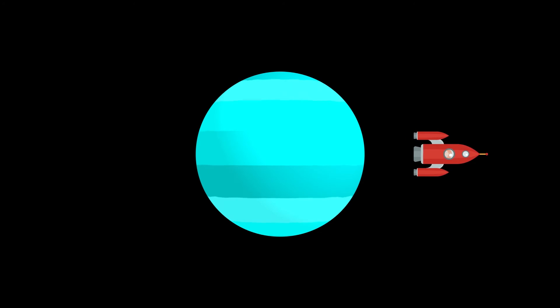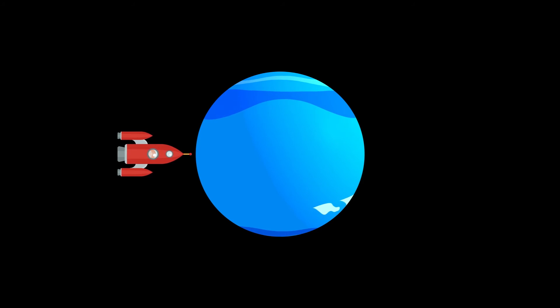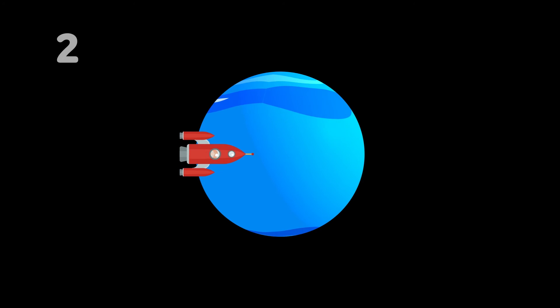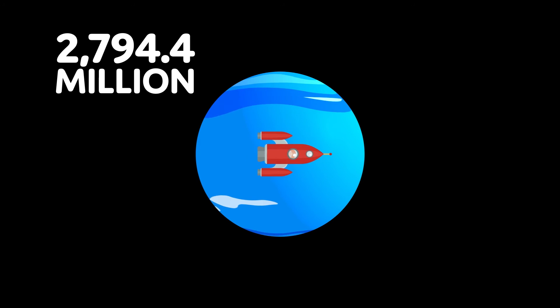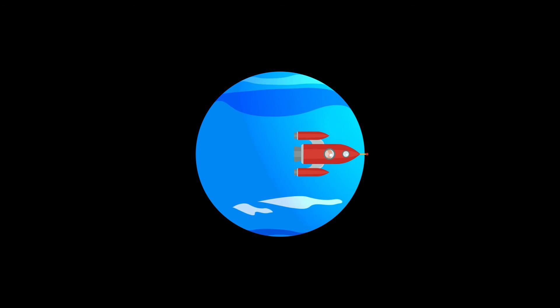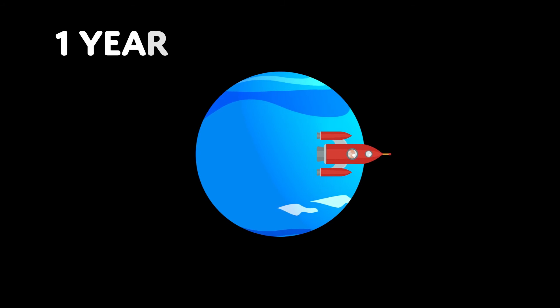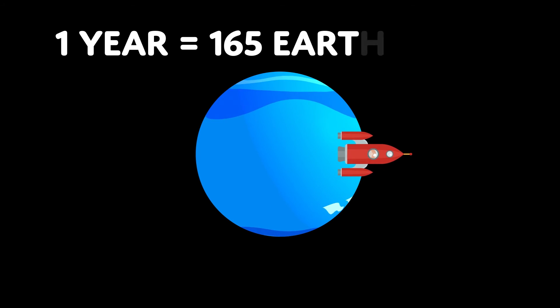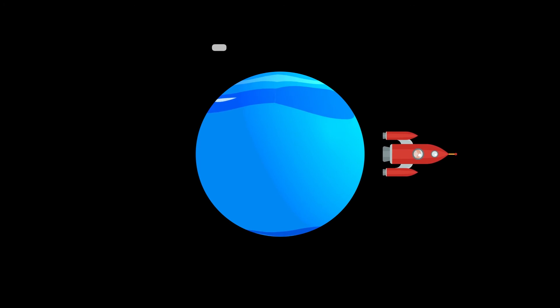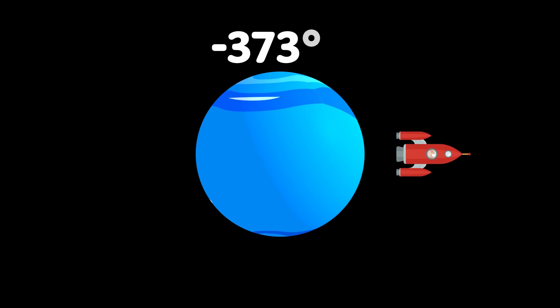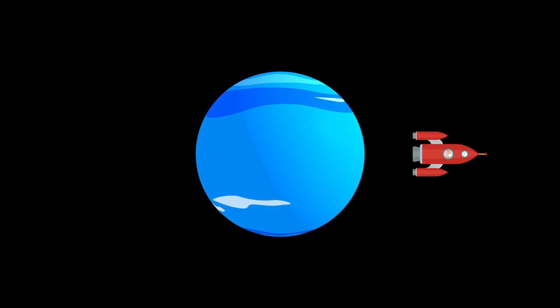The eighth planet is Neptune. It is 2,794.4 million miles from the sun. One year on Neptune is equal to 165 Earth years! And it's cold, negative 373 degrees Fahrenheit! I would be a popsicle!